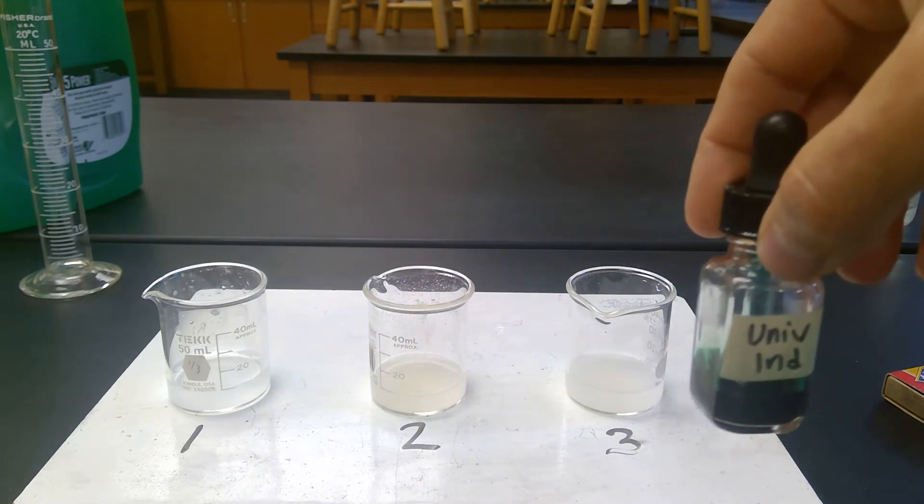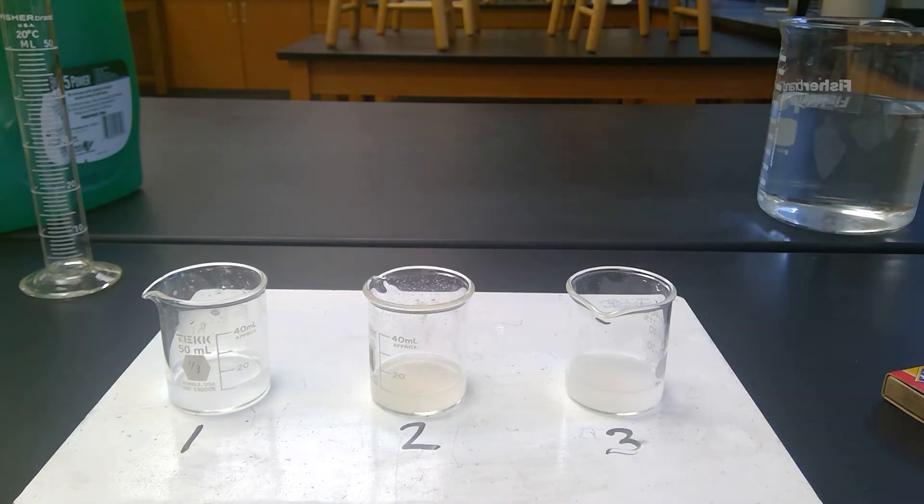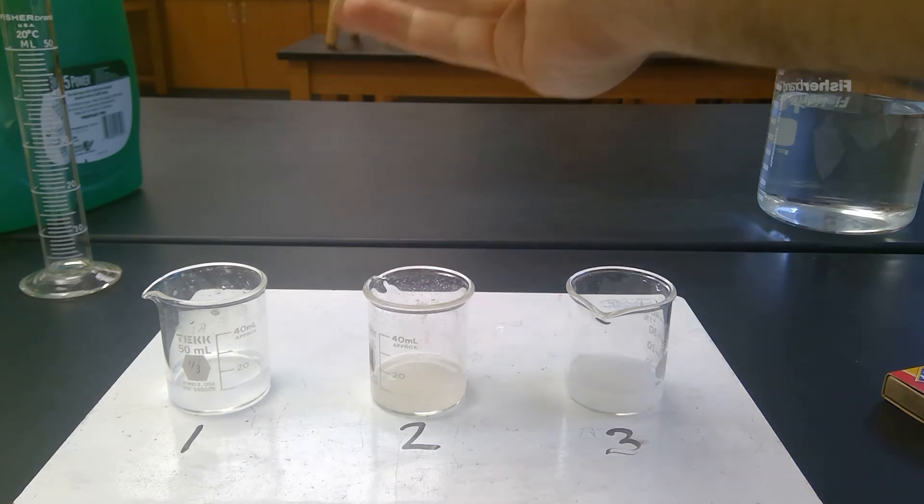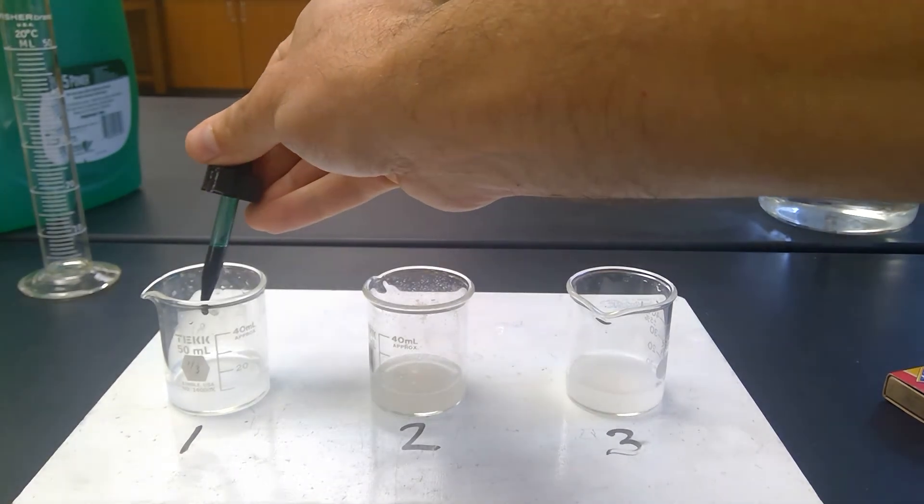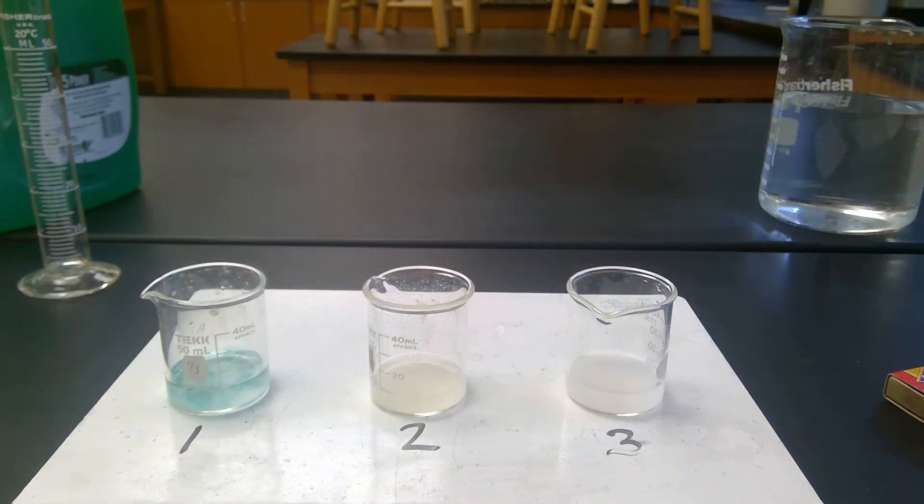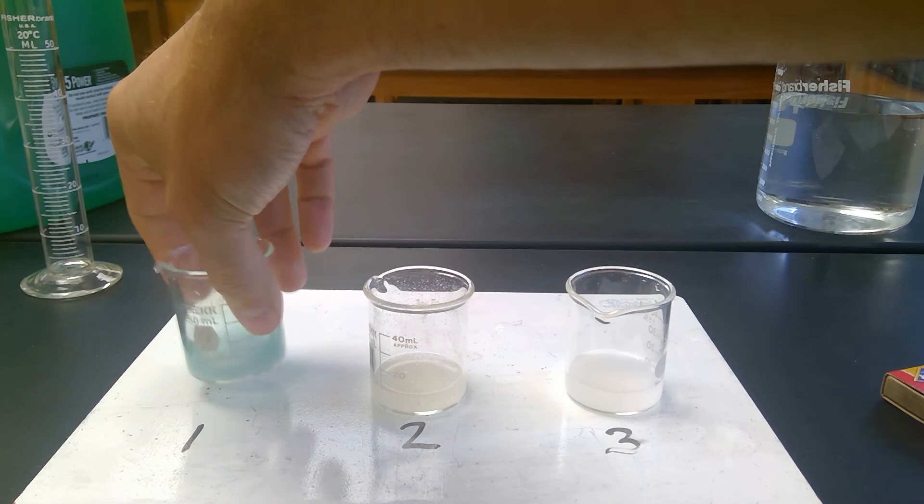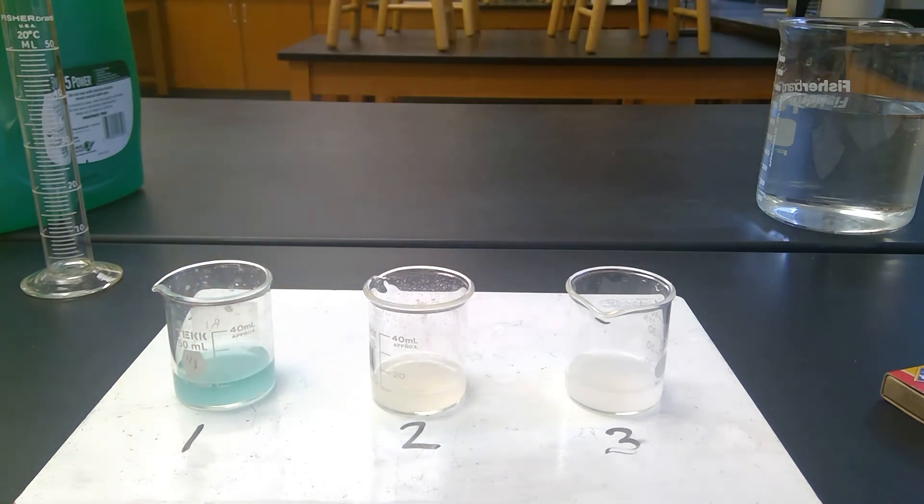So now I'm going to add this stuff called universal indicator, and this is going to determine the pH. So I'm going to add two drops to number one. Swirl that around and you see it's kind of a blue green color.